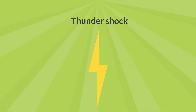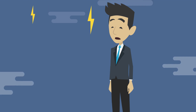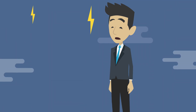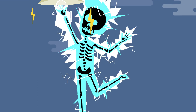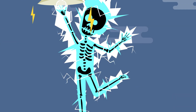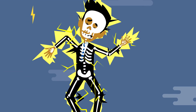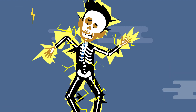Thundershock: The huge impact is emphasized in the context of metaphorical lightning. As a gimmick, the character may be shocked by it. A more direct analogy of the effects is being hit by actual lightning.